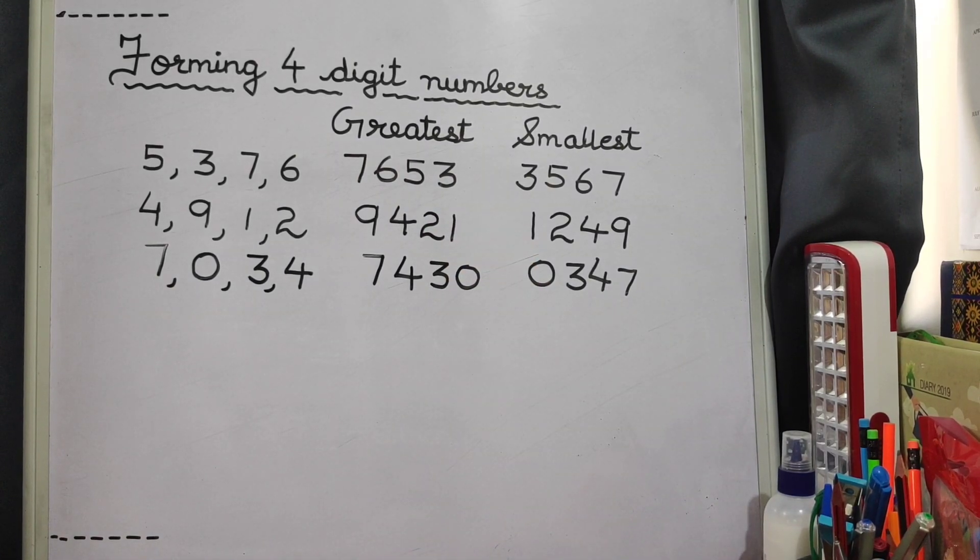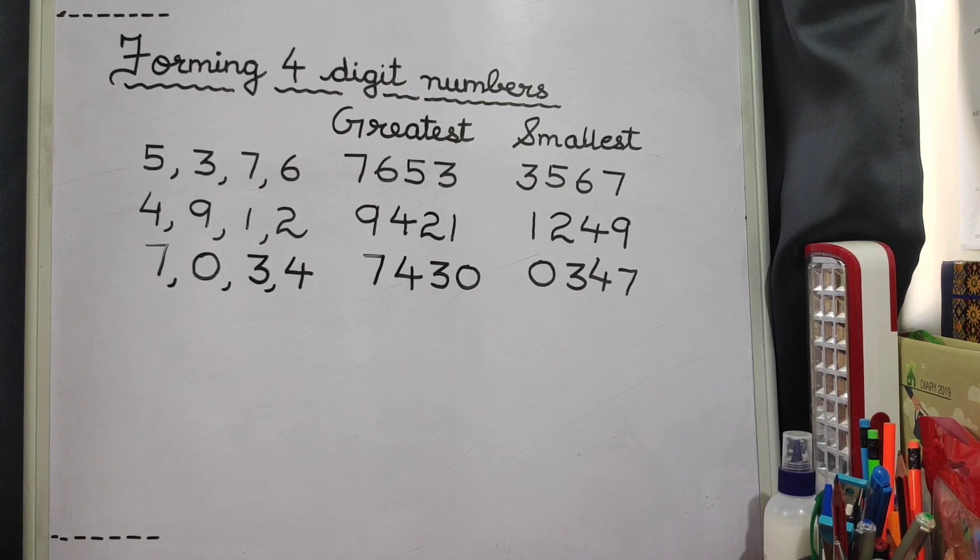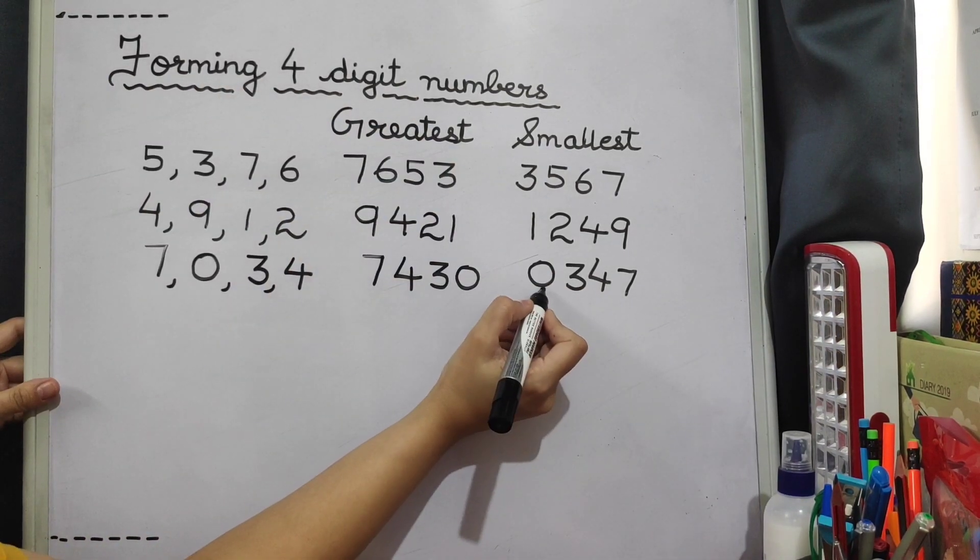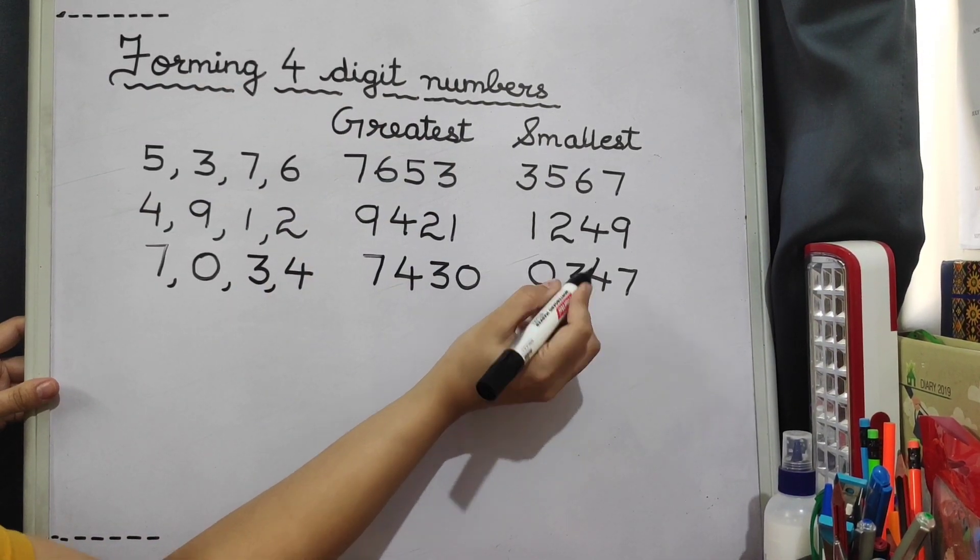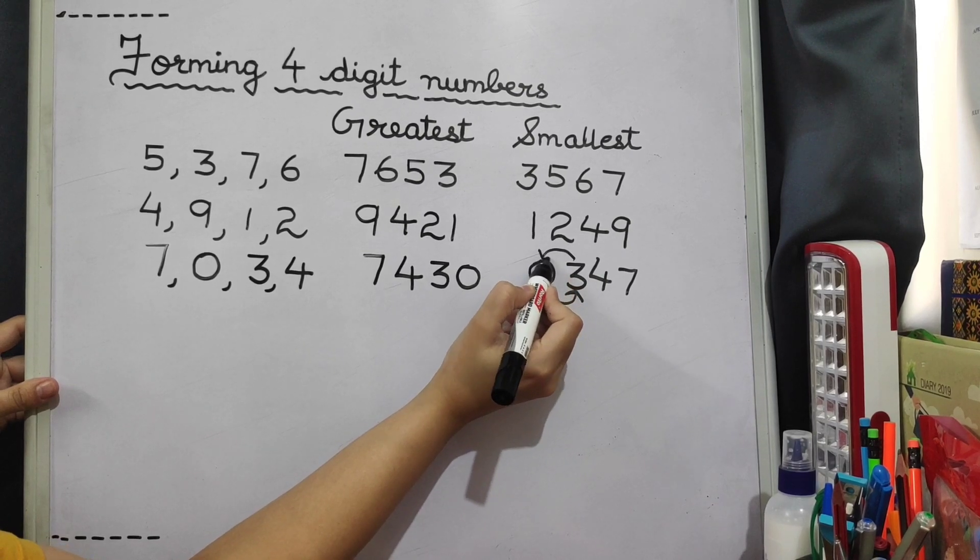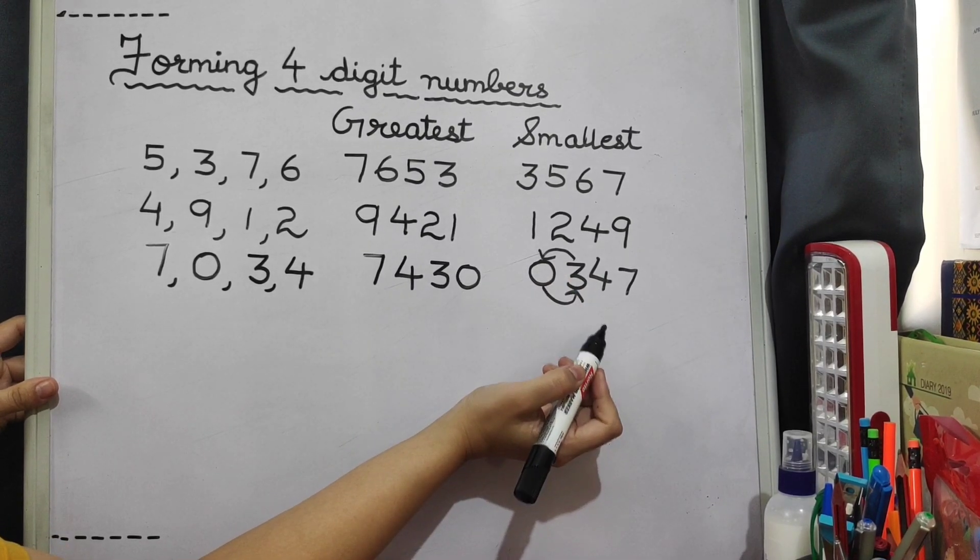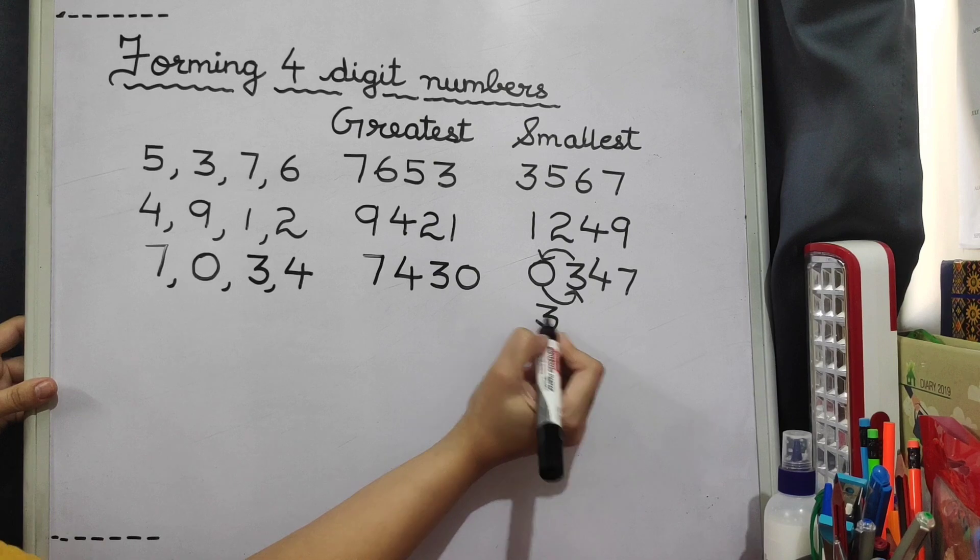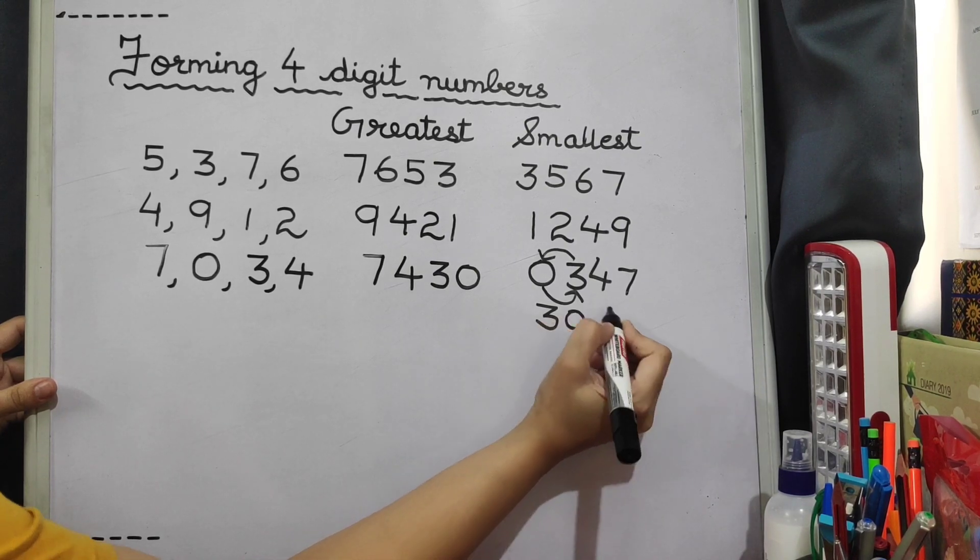So what are we going to do here? We are going to shift 0 to 100's place and 3 to the 1000's place. So the number will be 3047.